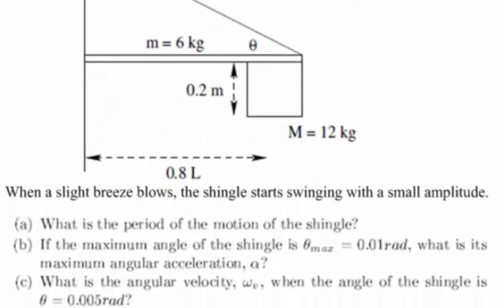What is the period of motion of this shingle? If the maximum angle of the shingle is 0.01 radians, what is its maximum angular acceleration α?